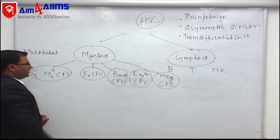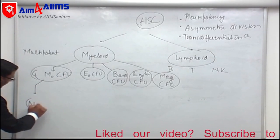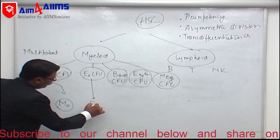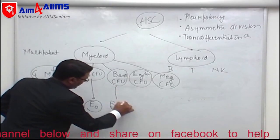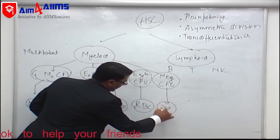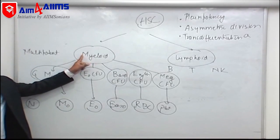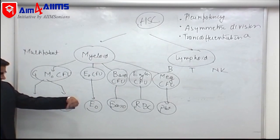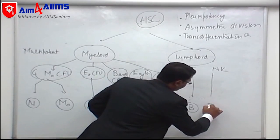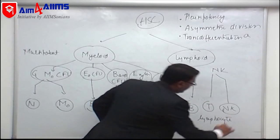These colony forming units give rise to mature cells. Granulocyte-monocyte CFU gives rise to neutrophils and monocytes; eosinophilic CFU gives rise to eosinophils; basophilic CFU gives rise to basophils; erythroids give rise to RBCs; megakaryocytes give rise to platelets. All of these are myeloid in origin. Lymphoid progenitors — B, T, and NK — produce B lymphocytes, T lymphocytes, and natural killer (NK) lymphocytes.